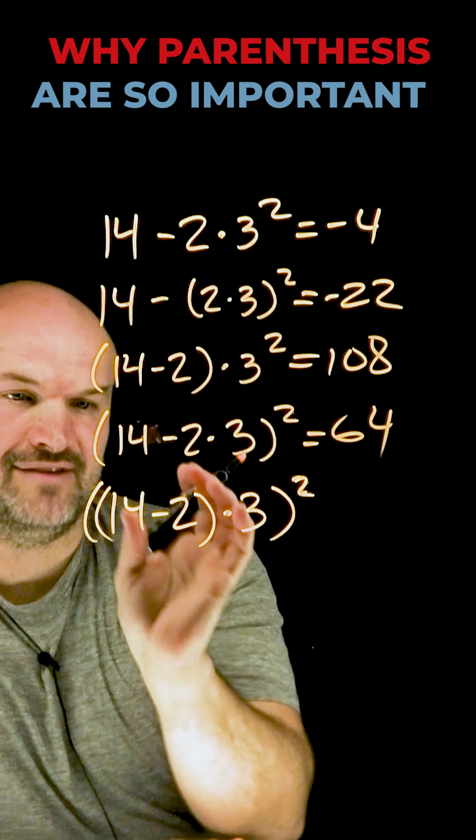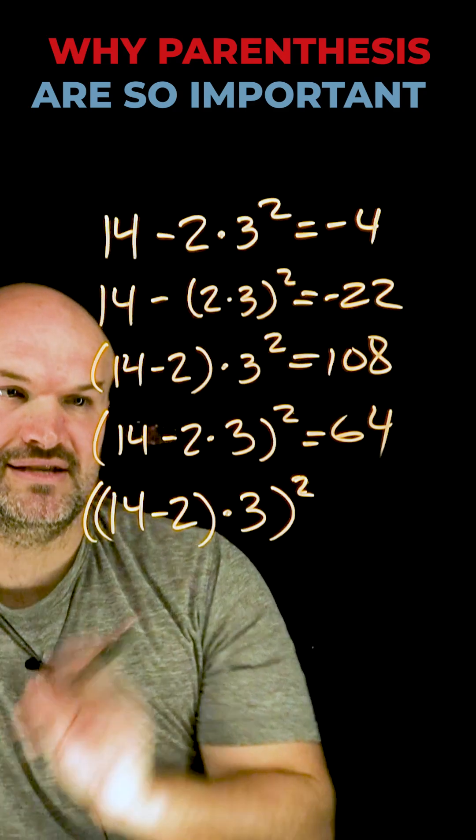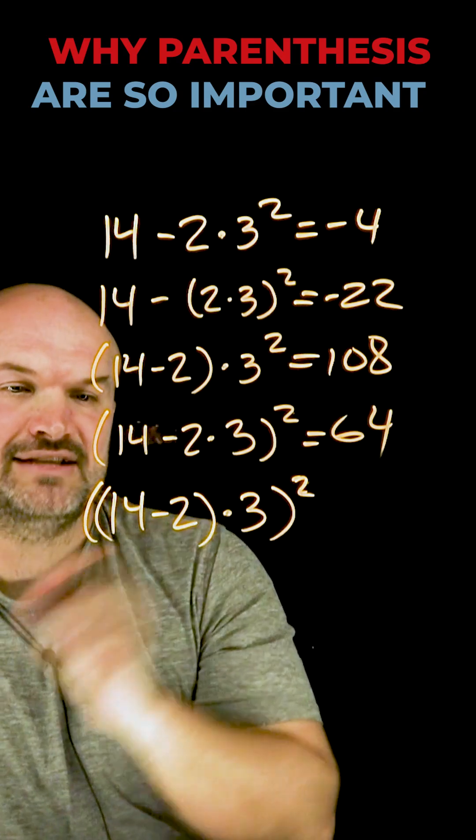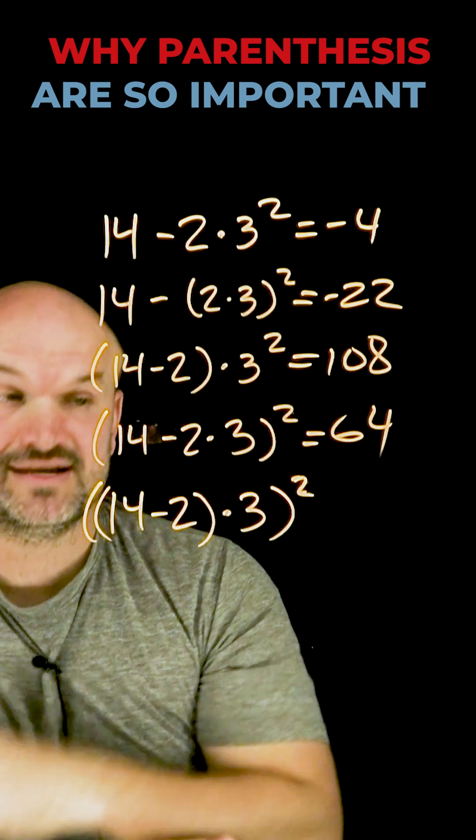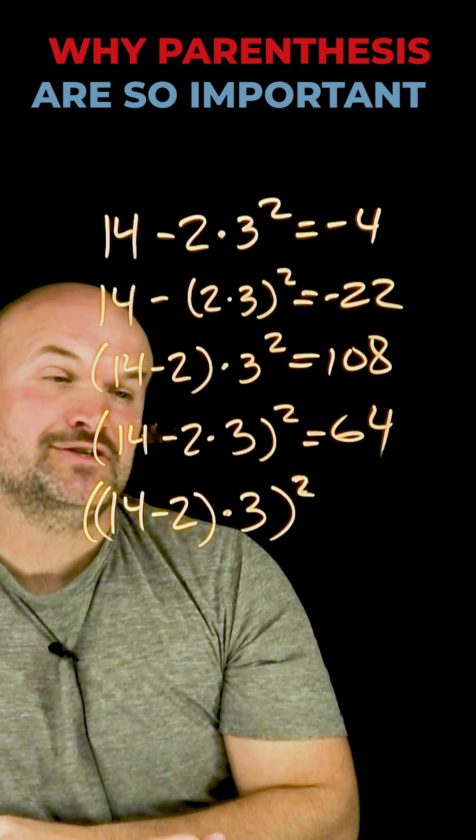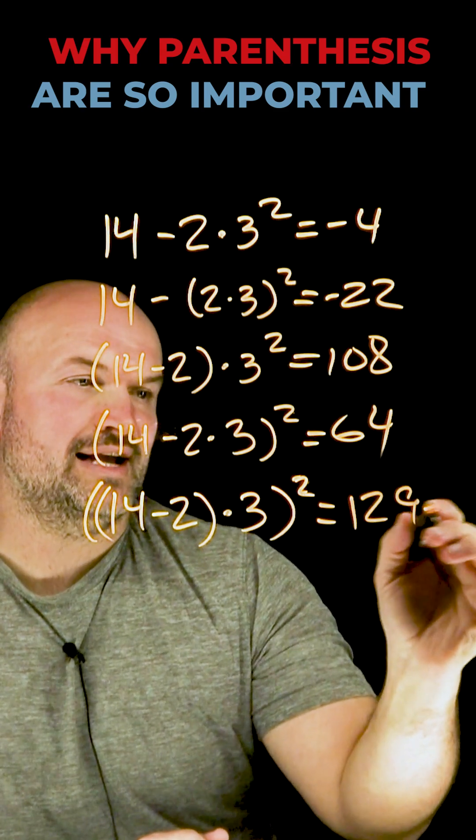Last but not least, I have parentheses inside of another parentheses. So I'm going to focus on the 14 minus two first. 14 minus two is 12. Then I can multiply by three, which is 36. Now I need to go ahead and square it. So 36 squared is 1296.